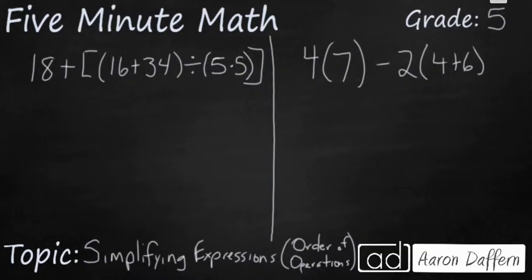This first expression, we have two sets of parentheses within the bracket. So we're going to take care of this first set of parentheses first. So let's go ahead and rewrite this. And I'm going to take this 16 plus 34. I'm going to simplify that to 50.